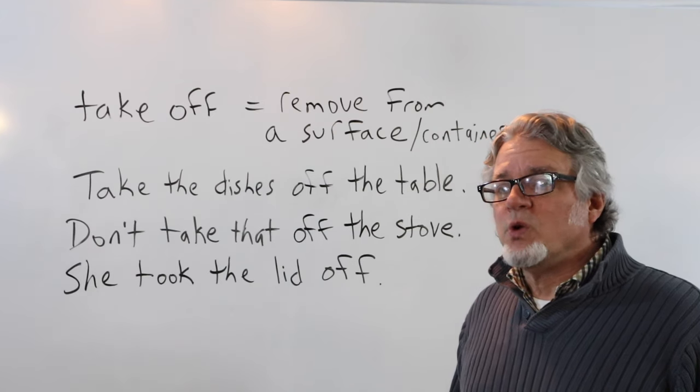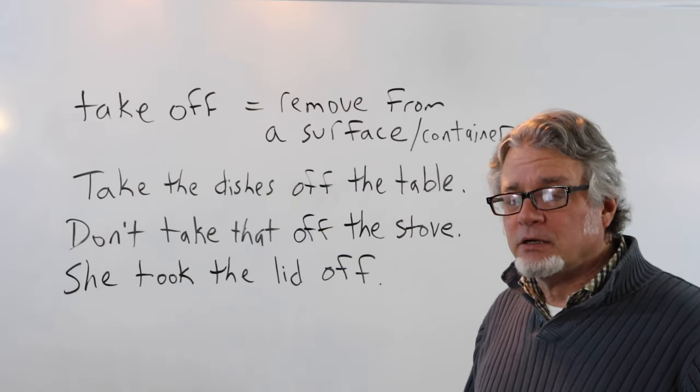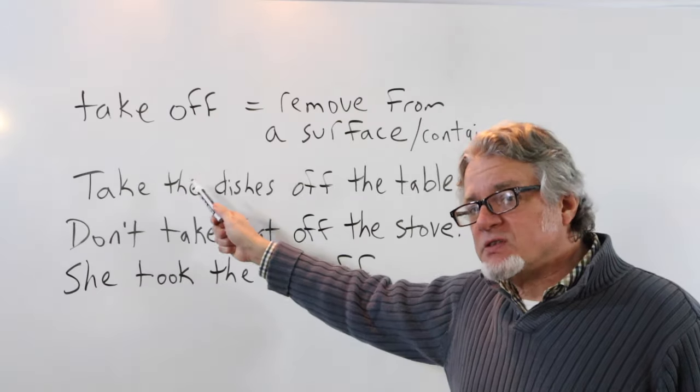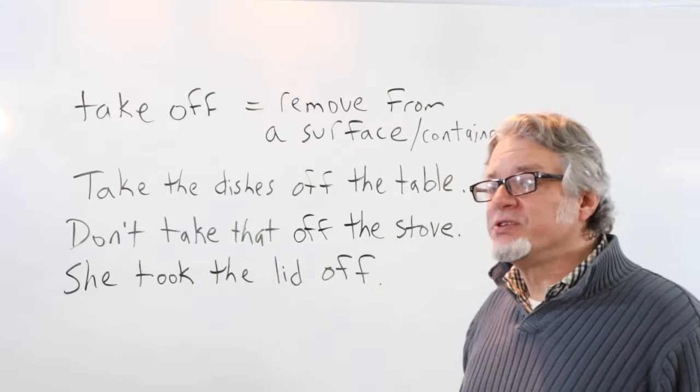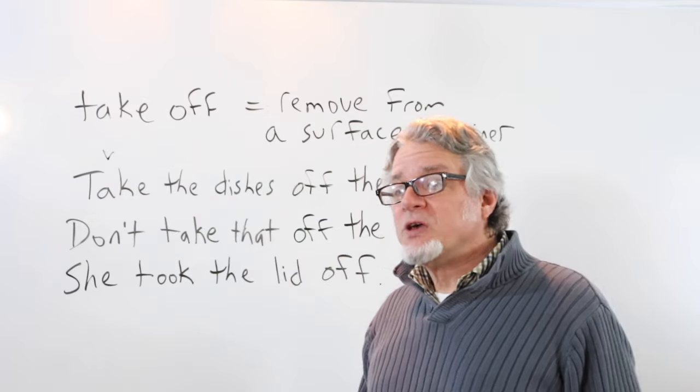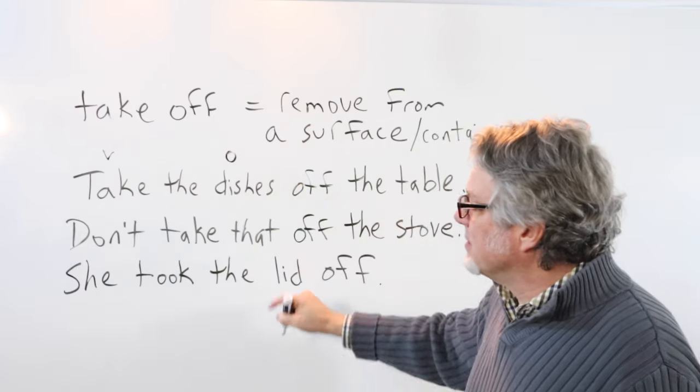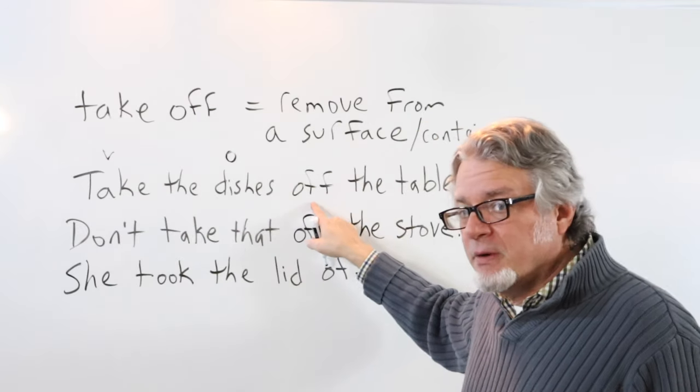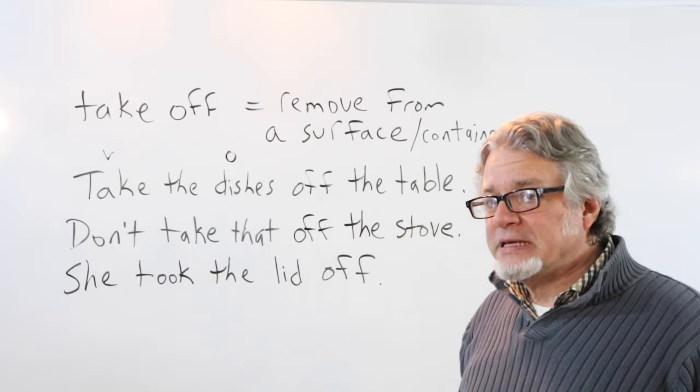Take off is used when removing something from a surface or from a container. In this sentence, this is a command. Someone is asking another person to take the dishes off the table. Here's the verb. The subject is you, and this is the object. Notice that the verb is separated from the preposition. Take the dishes off the table.